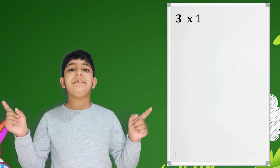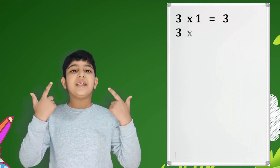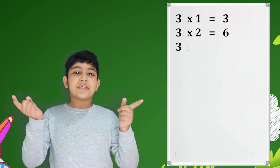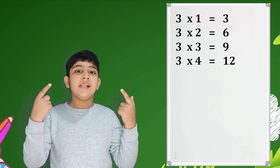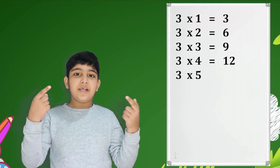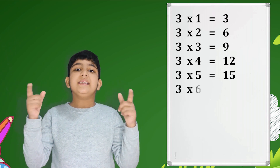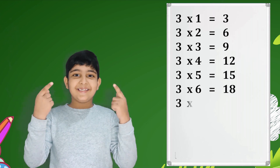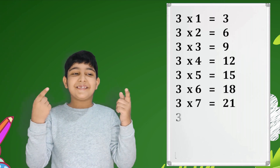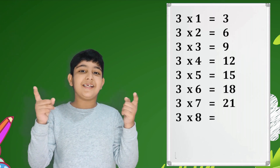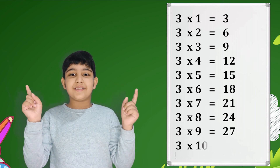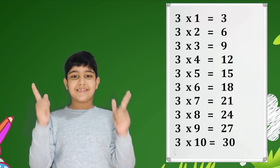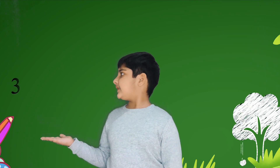Three ones are three. Three ones are three, three twos are six, three threes are nine, three fours are twelve, three fives are fifteen, three sixes are eighteen, three sevens are twenty-one, three eights are twenty-four, three nines are twenty-seven, three tens are thirty. Let's sing again.